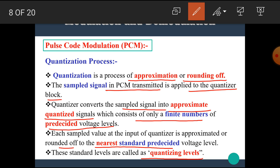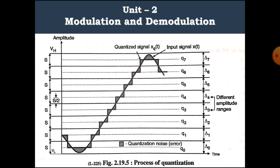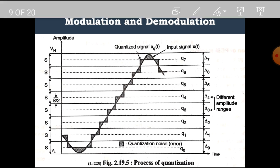In short, quantization is the process of approximation or rounding off. If we give the discrete time signal to the quantizer block, the quantizer converts it into an approximate quantized signal having pre-decided voltage levels. Let's see the quantization process on the diagram.